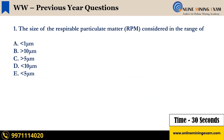The first question is: the size of the respirable particulate matter is considered in the range of — A: less than 1 micron, B: greater than 10 micron, C: greater than 5 micron, D: less than 10 micron, E: less than 5 micron. Your time starts now.